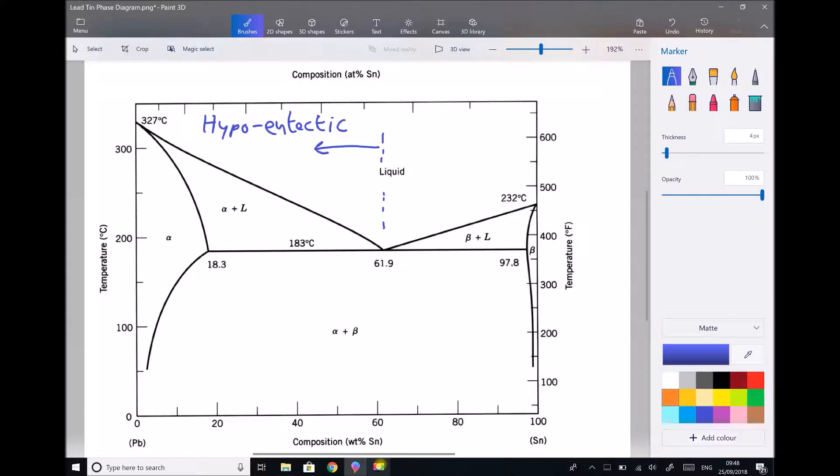Next we're going to look at something called a hypo-eutectic composition, and by hypo-eutectic we mean below the eutectic composition, so anything below a tin content of 61.9%.